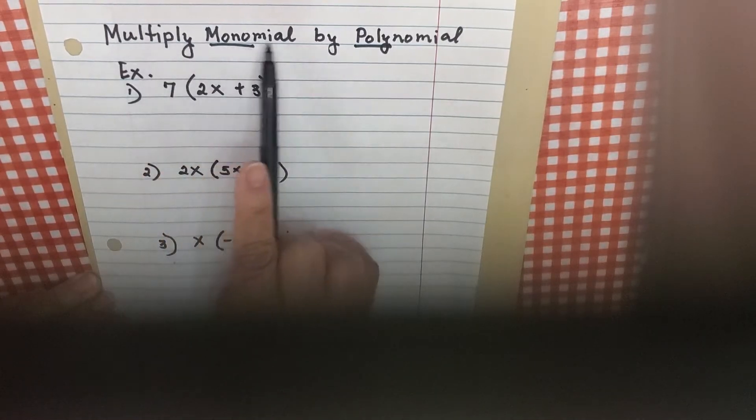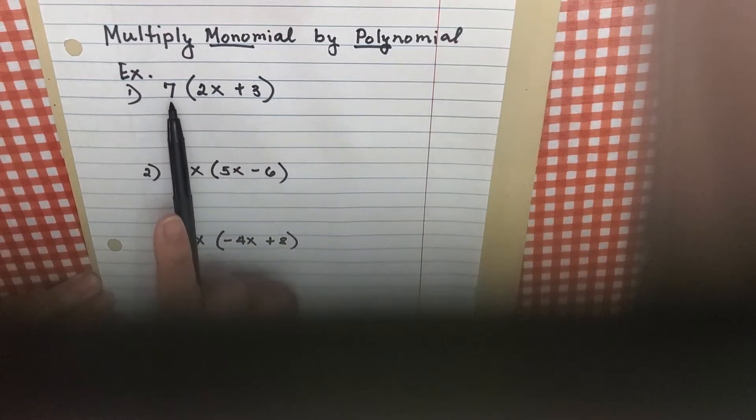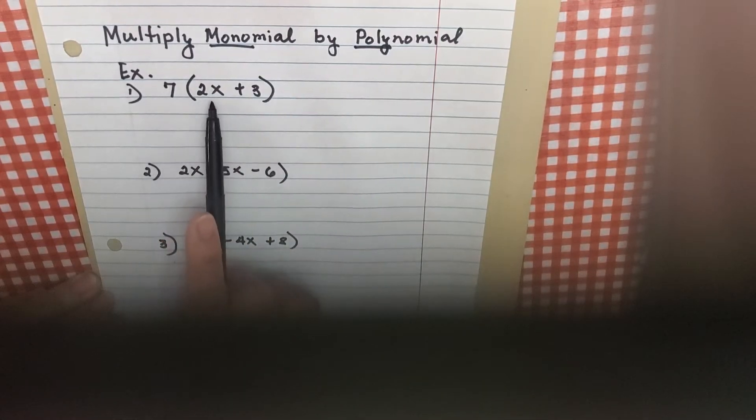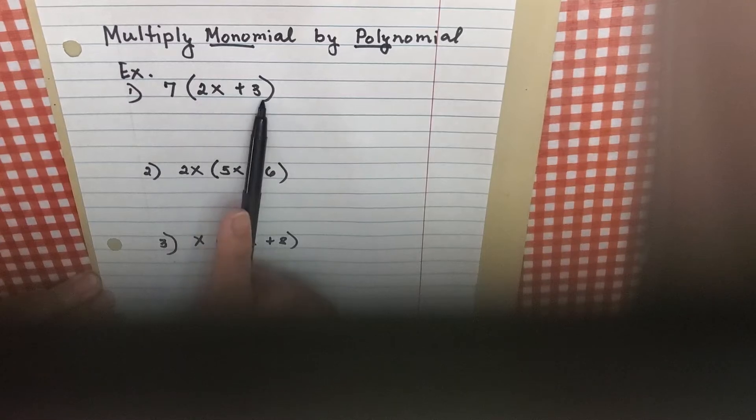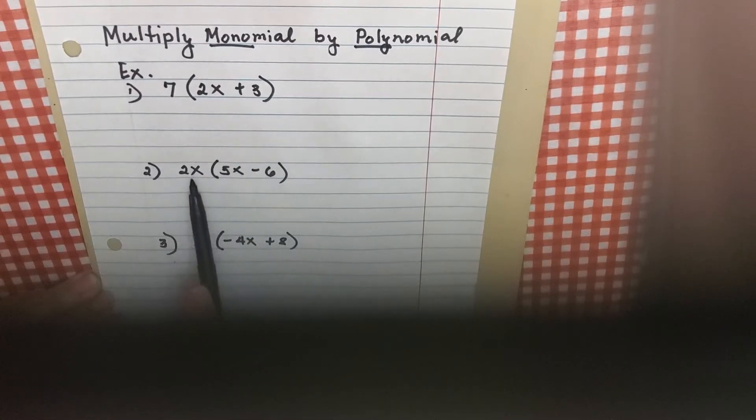Monomial means one term. So multiply monomial by polynomial. This is mono multiplied by polynomial or binomial because this is two terms.